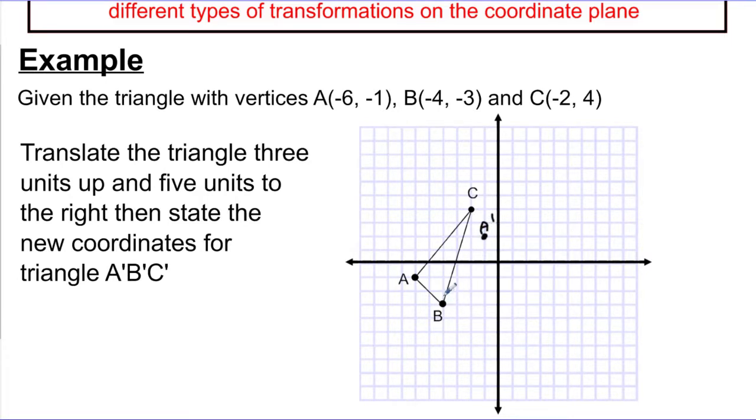B is going to go up one, two, three, and to the right one, two, three, four, five. That would be B prime. And C, I'm going to go up one, two, three, and to the right one, two, three, four, five, and I would call this one C prime.